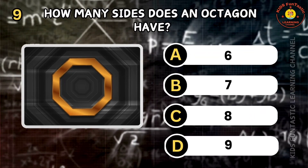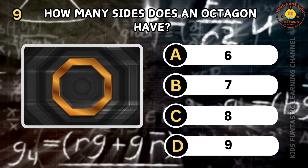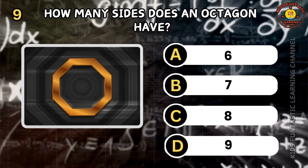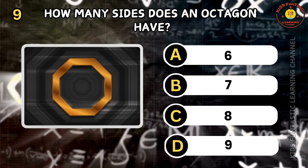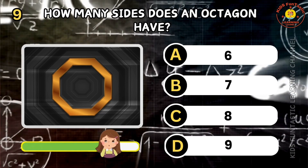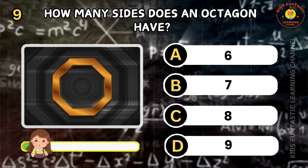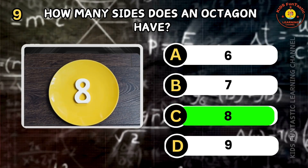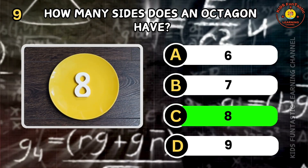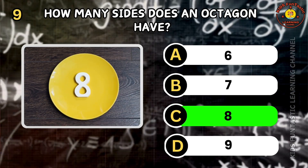Question 9. How many sides does an octagon have? A: 6, B: 7, C: 8, D: 9. You're so smart! The correct answer is C. An octagon has eight sides.